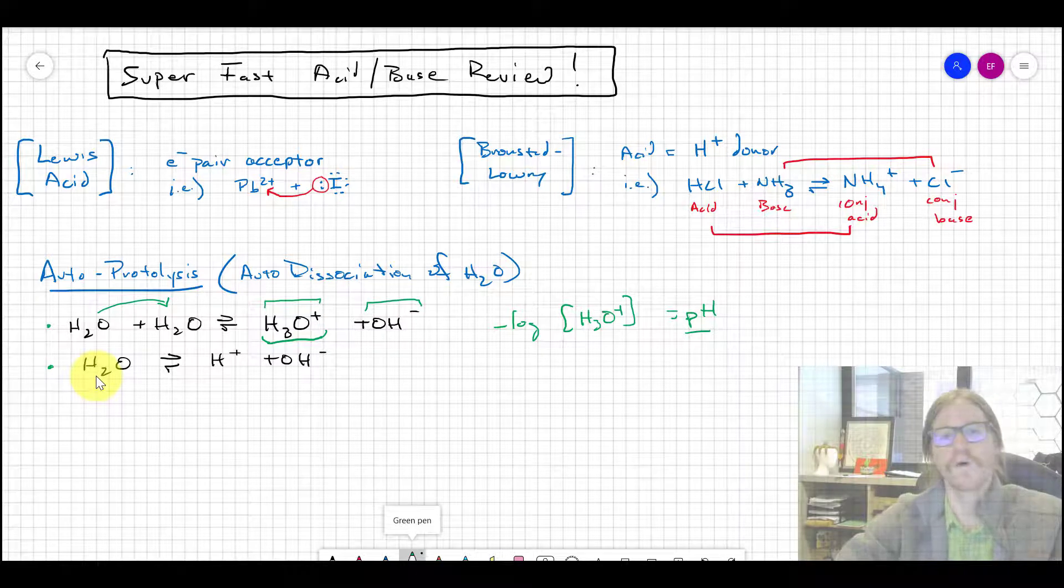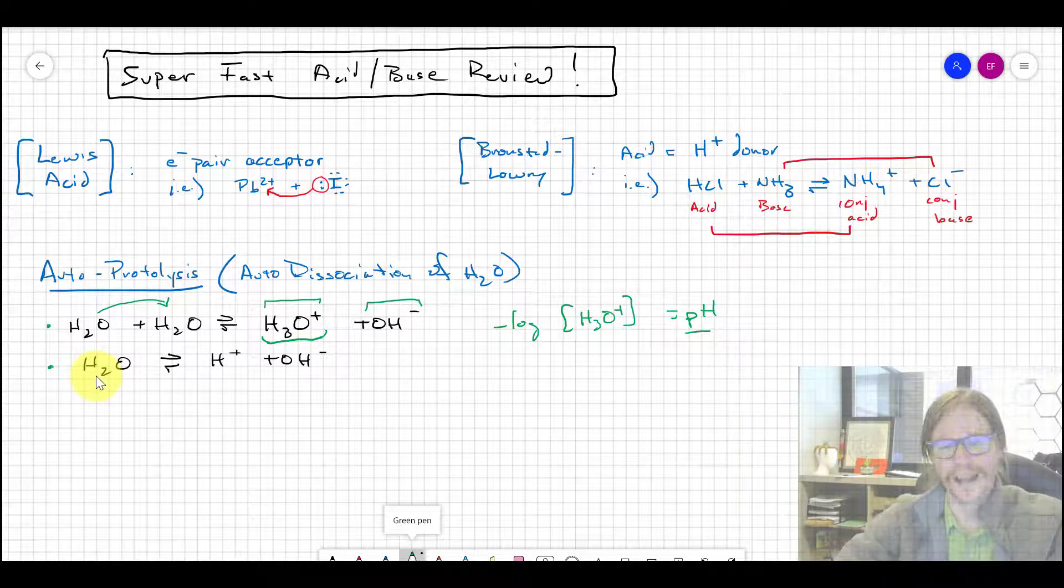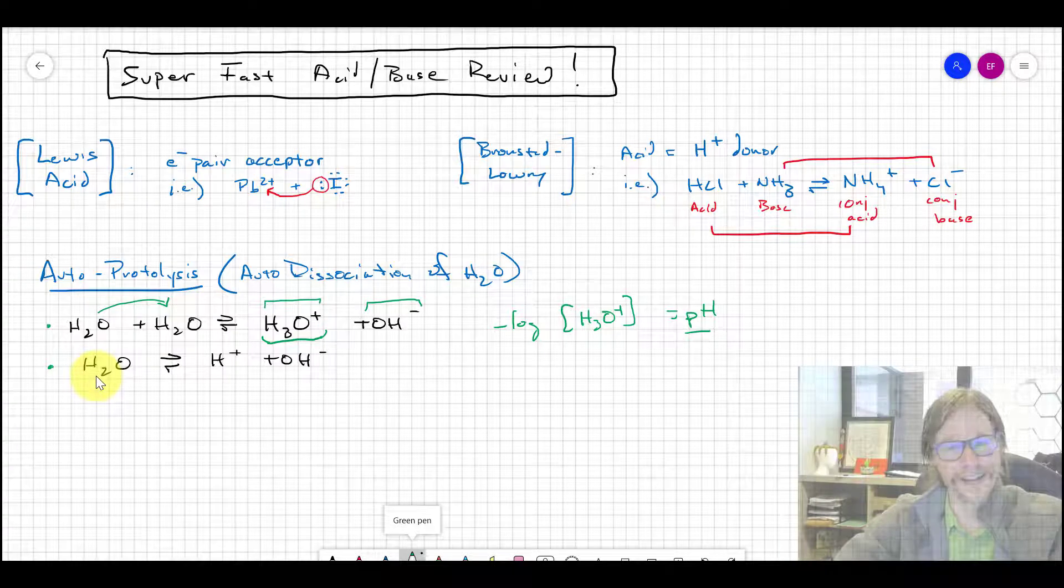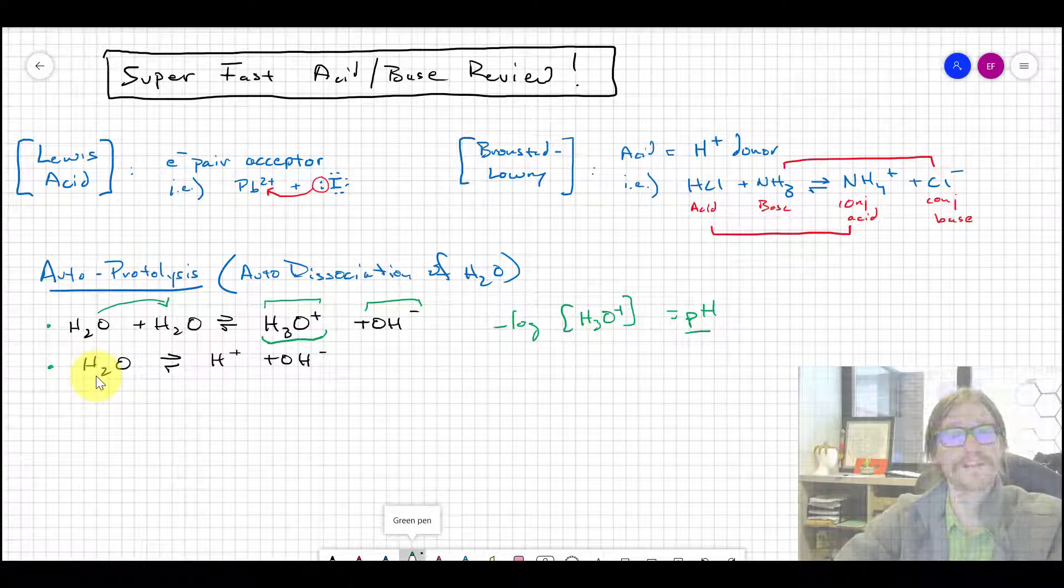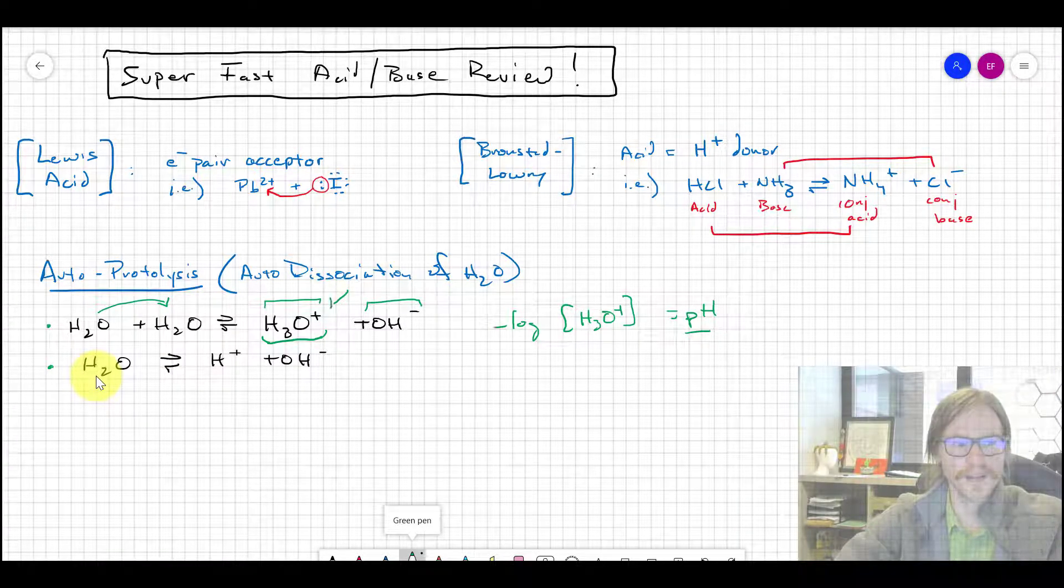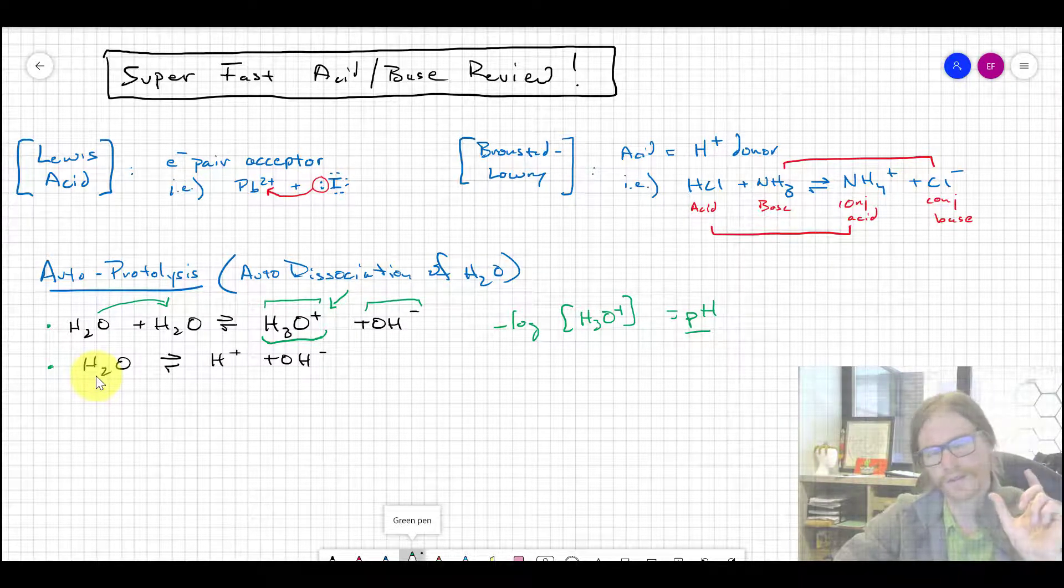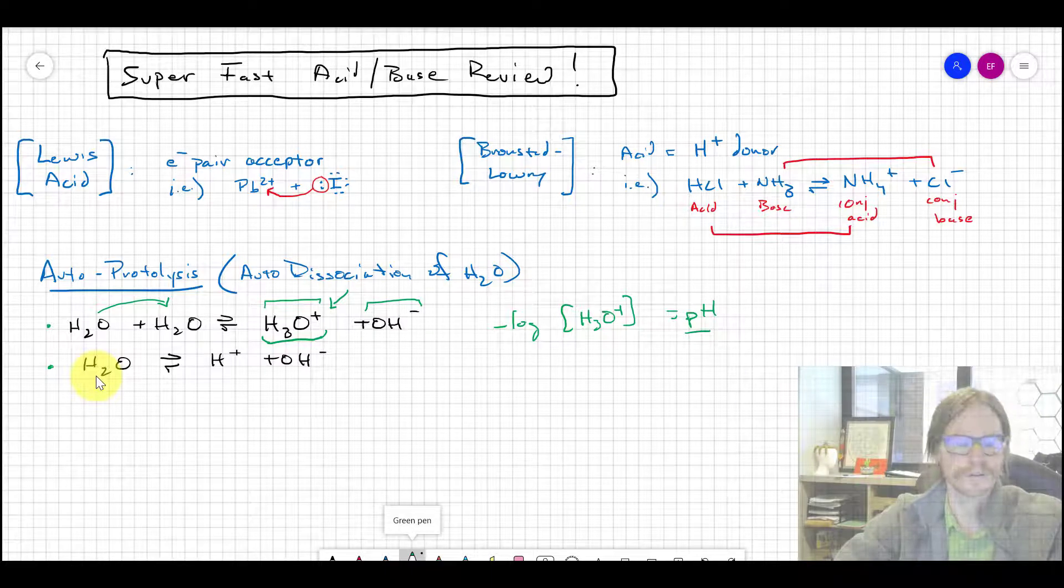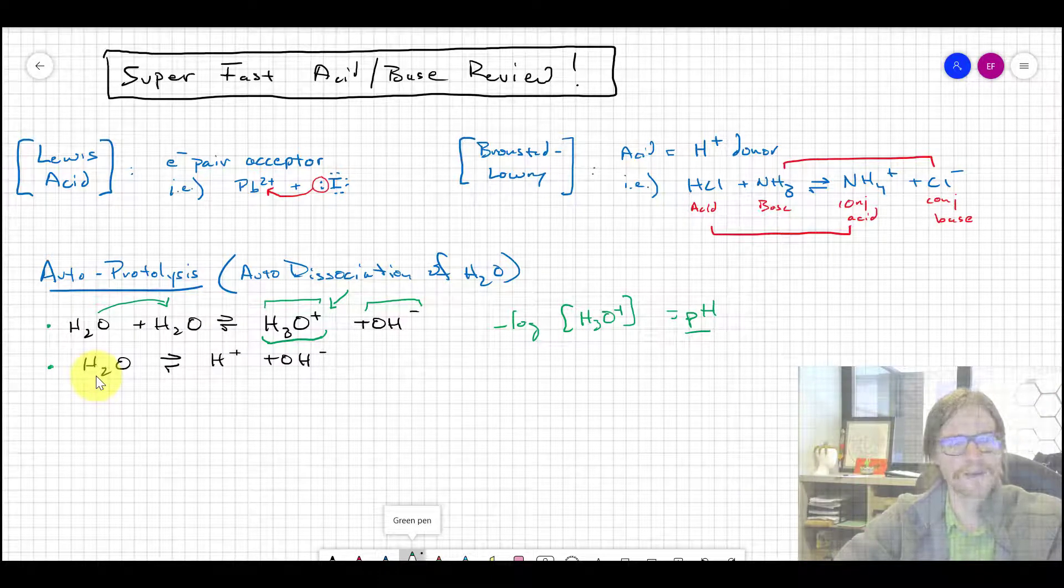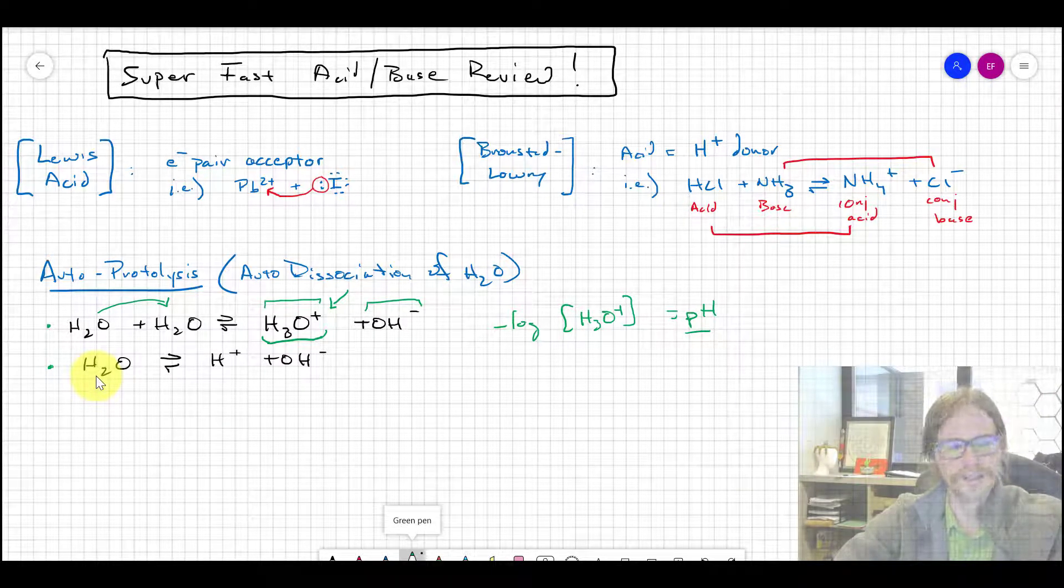If something wants to give up a proton, it's going to be a stronger acid, not because itself is the acid, but because it generates the H3O+. That H3O+ is the acidity of the solution. It's sort of nuanced and subtle, but it's an important distinction to think about.